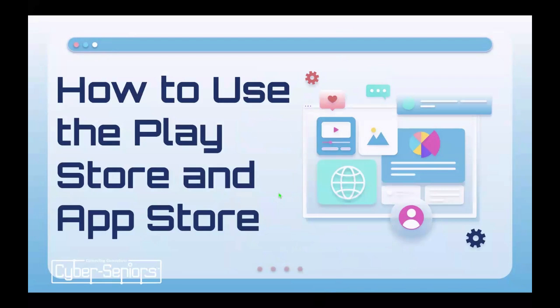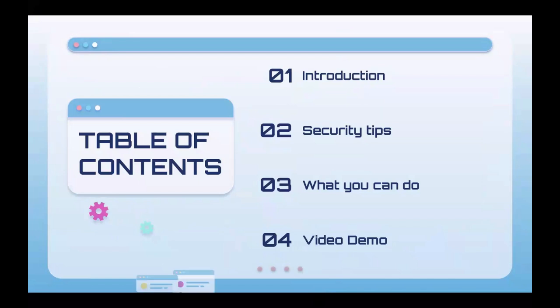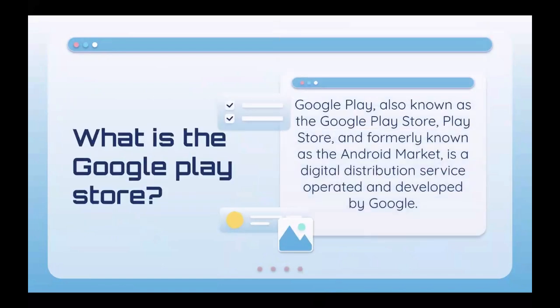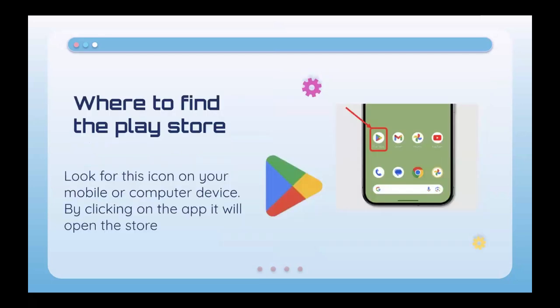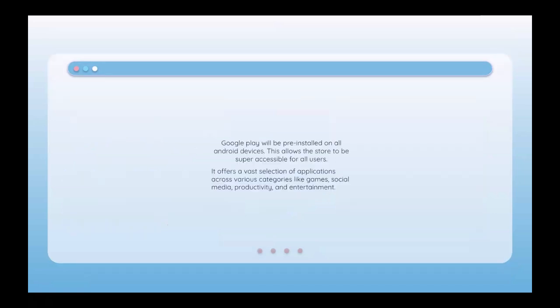Welcome to a presentation on how to use the Play Store and the App Store. These are the key points we will be talking about. The Google Play Store is the Android version to find and install applications — say you wanted to download Spotify or something similar on Android phones, you would use Google Play Store, originally called the Android Market. You can find the Play Store icon on your phone or tablet, where you can install and download apps of all sorts.